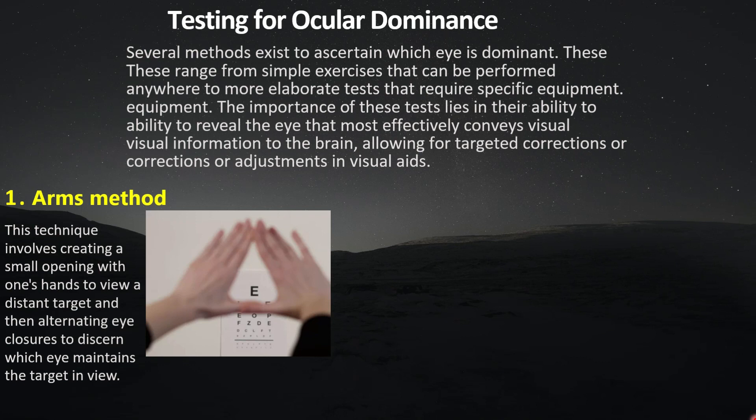Then center the target within the triangular opening they have created with their hands. While keeping the Snellen chart or any object in view, close the patient's left eye. If the object remains centered within the triangular opening, it means the right eye is the Dominant Eye. But if the letter of the Snellen chart appears to move out from the triangular opening or is no longer centered, then close the right eye instead, and the object would be centered — this indicates that the patient's left eye is the Dominant Eye.